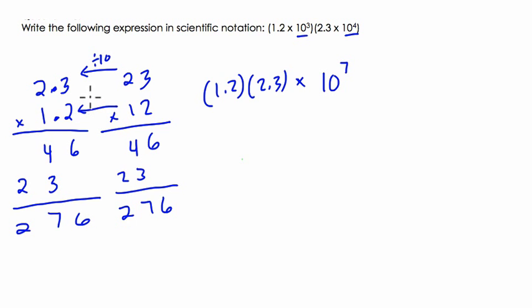But in fact, both numbers are 10 times smaller. So, overall, the whole overall product is 10 times smaller, and another 10 times smaller is 100 times smaller. So, we take our result, and we move our decimal here twice, to represent that 100 times smaller, and we get 2.76.